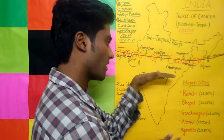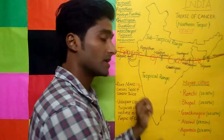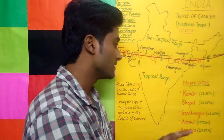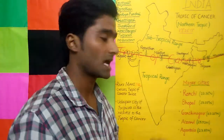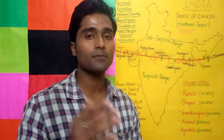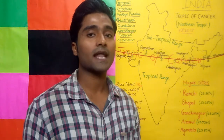This division also explains food habits: people in the subtropical range eat chapati while people in South India eat rice. This is not just habit — it is due to the climatic conditions caused by the Tropic of Cancer dividing India into tropical and subtropical zones. Thank you friends, please subscribe, like, and share the channel.